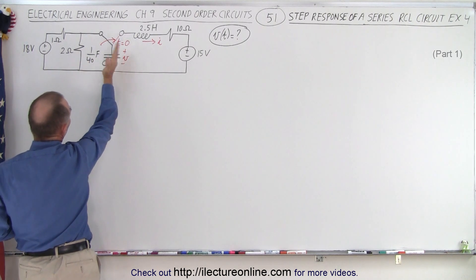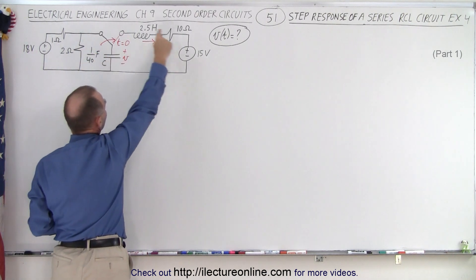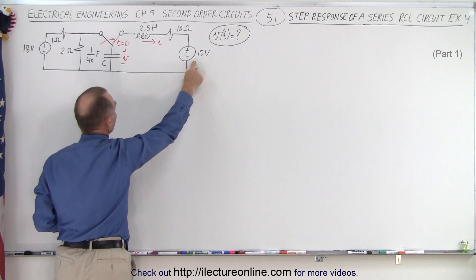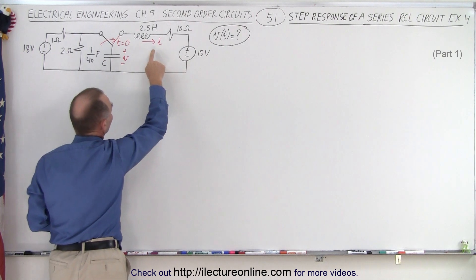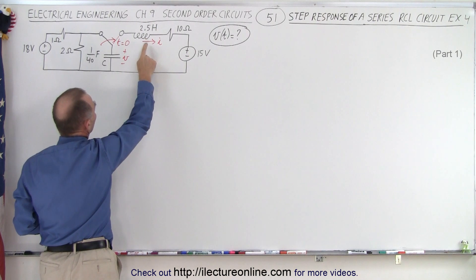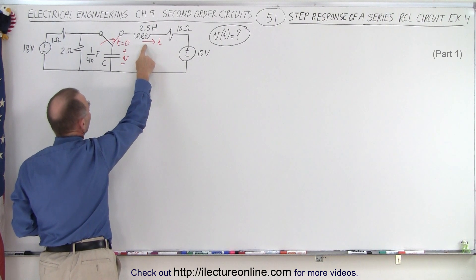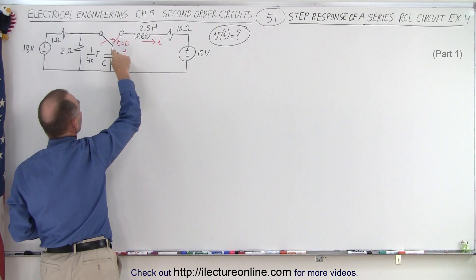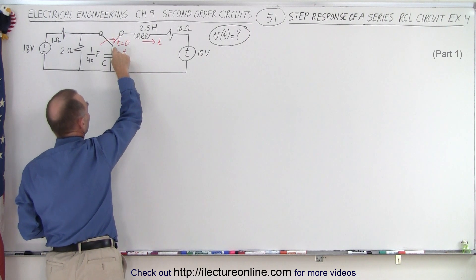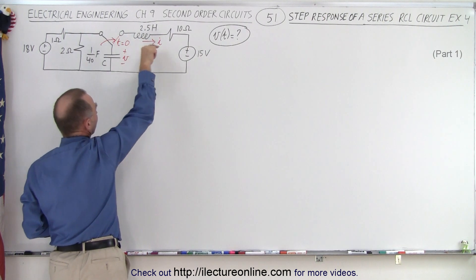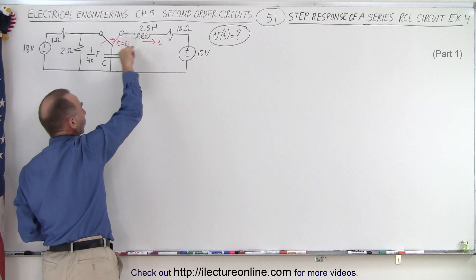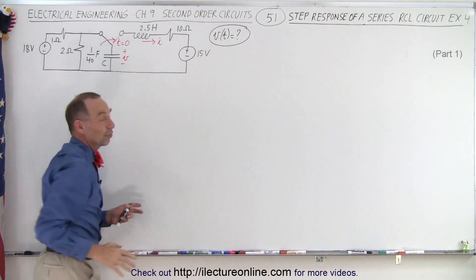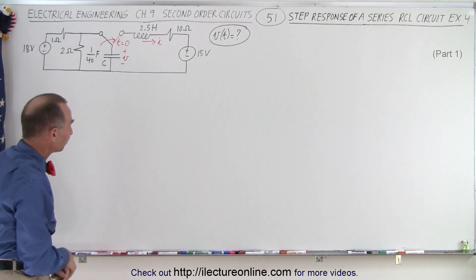Then at T equals zero, the switch goes to the other side. Now we have a different circuit. This source is now driving the current through the circuit. By convention, the current goes from the positive side of the capacitor through the inductor — even though the voltage will be driving the current in the opposite direction, so we need to be careful there.